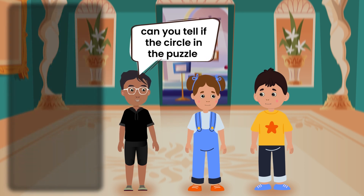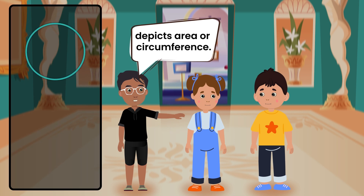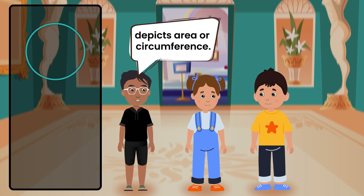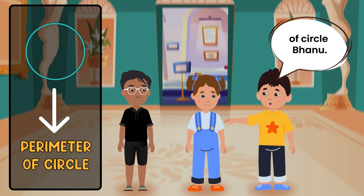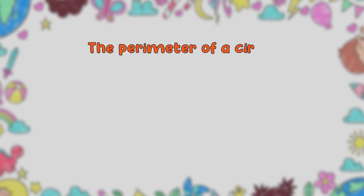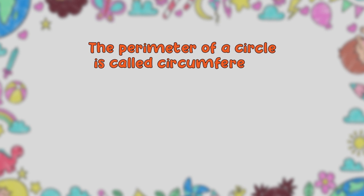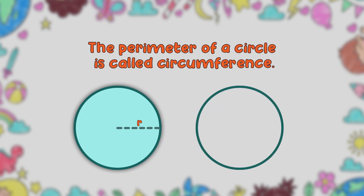Now Peter, can you tell if the circle in the puzzle depicts area or circumference? It shows the perimeter of the circle, Banu. Excellent, Peter! But the perimeter of a circle is called circumference. So the given image shows the circumference of the circle.